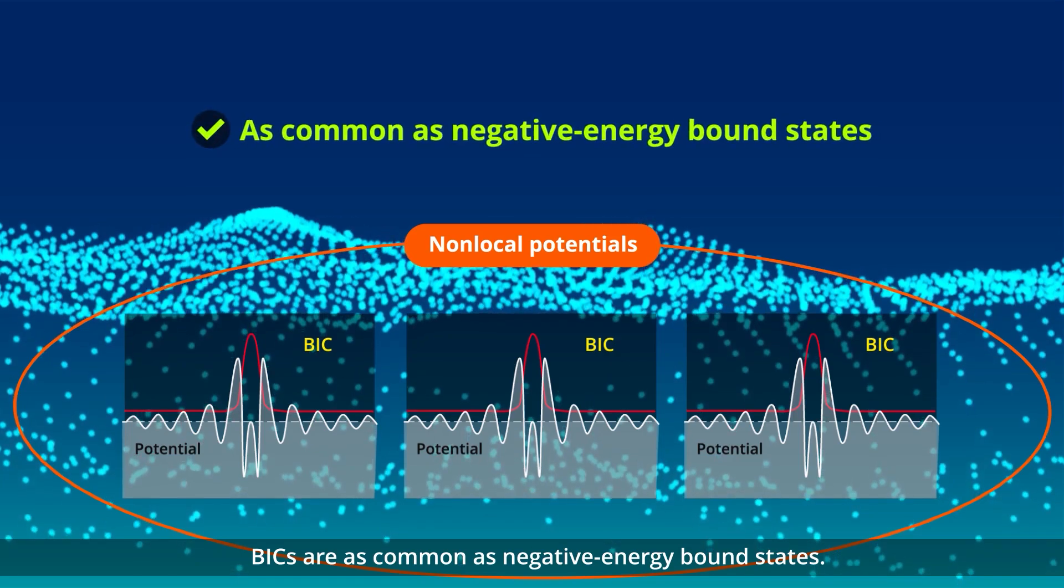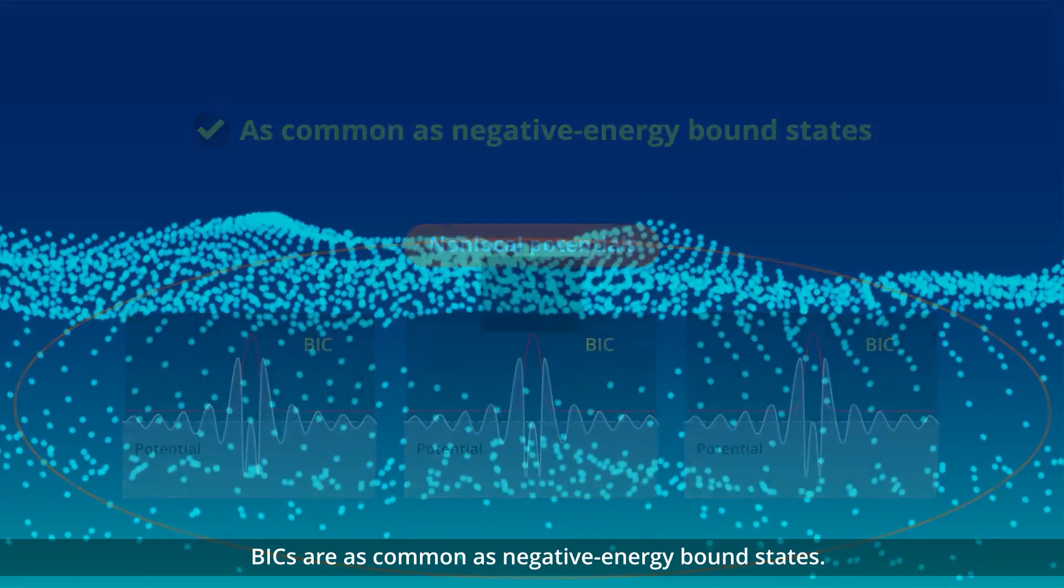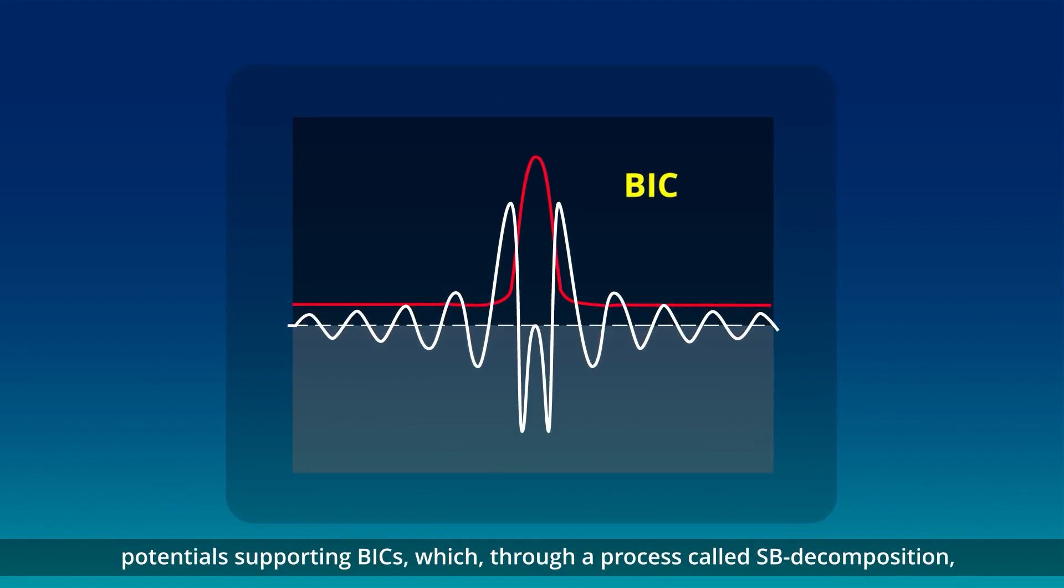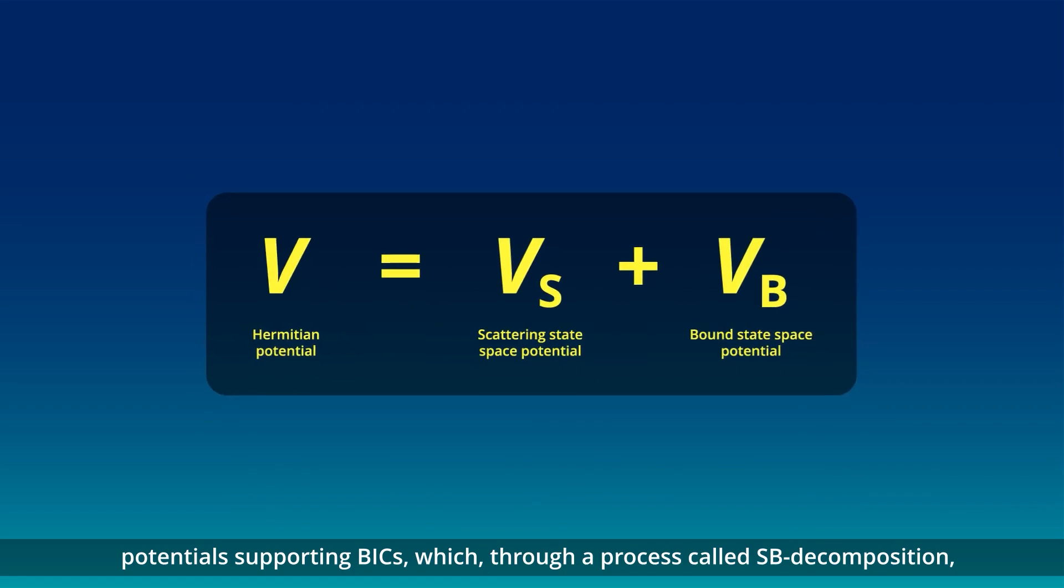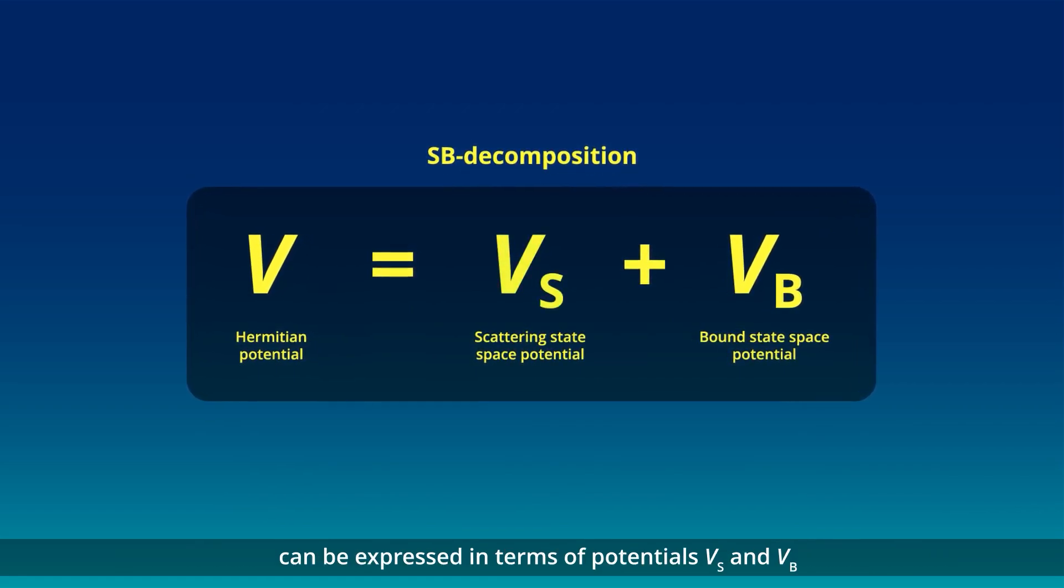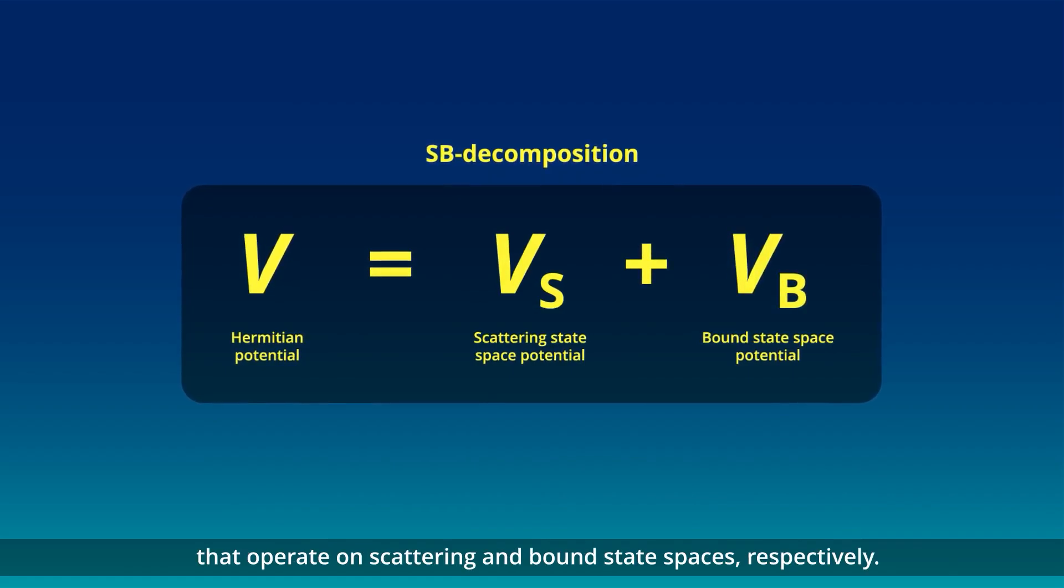The study introduces a method for constructing all possible hermitian potentials supporting BICs, which, through a process called SB decomposition, can be expressed in terms of potentials Vs and Vb that operate on scattering and bound state spaces, respectively.